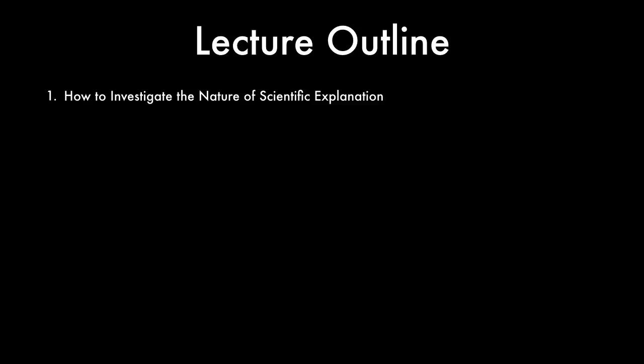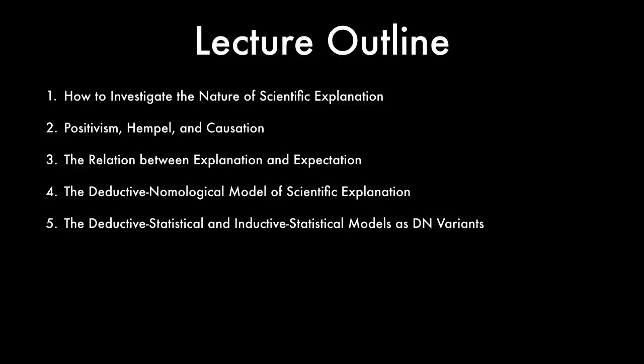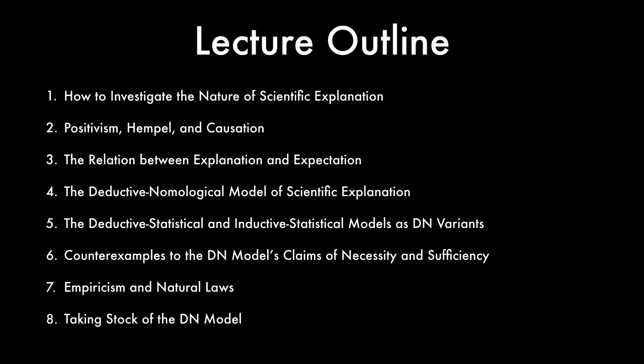One, how to investigate the nature of scientific explanation. Two, positivism, Hempel, and causation. Three, the relation between explanation and expectation. Four, the deductive-nomological model of scientific explanation. Five, the deductive-statistical and inductive-statistical models as deductive-nomological variants. Six, counterexamples to the DN model's claims of necessity and sufficiency. Seven, empiricism and natural laws. And eight, taking stock of the DN model.